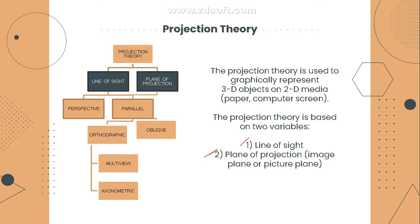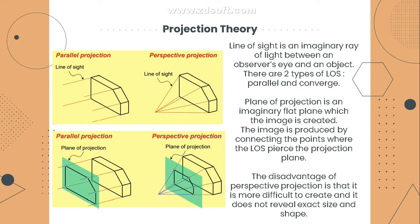The difference between line of sight and plane of projection: the line of sight is the imaginary ray of light between an observer's eye and an object. In other words, we extend the edges of an object towards the observer. There are two types of line of sight: parallel and converging. In parallel projection, the lines never meet — you just extend them at a 90-degree angle, straight lines towards the observer.